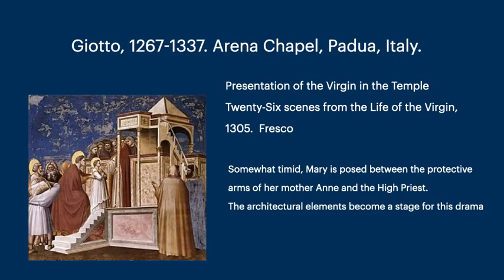We're going to begin with Giotto and the Arena Chapel — one of the few series on the Virgin's life. This is the Presentation of the Virgin in the Temple. Giotto did 26 scenes from the life of the Virgin in 1305 on fresco. Here we have a somewhat timid Mary who is posed between the protective arms of her mother Anne and the high priest. Notice how the architectural elements support and tell the story of this illustration.